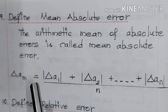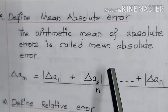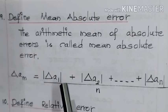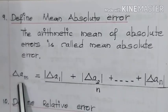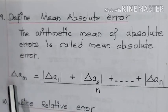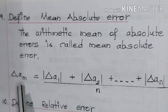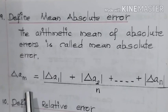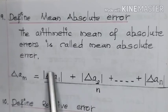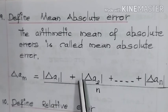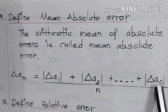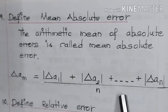We have already studied about absolute errors. For example, if there are five absolute errors, you add them all and divide by five, you get the arithmetic mean. Here, delta AM represents the mean of the absolute errors. So this is the expression for mean absolute error: modulus of delta A1 plus modulus of delta A2, up to delta AN, divided by N terms.